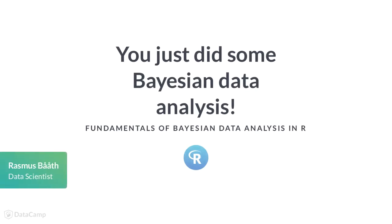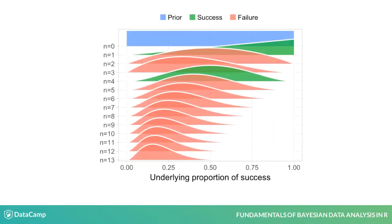Hey, you just did some Bayesian data analysis. You took a Bayesian model, gave it some data and got out the probability distribution over the underlying proportion of success for your zombie drug.